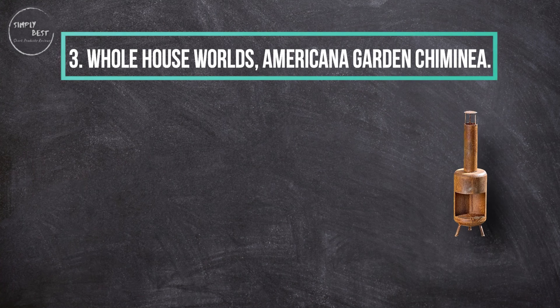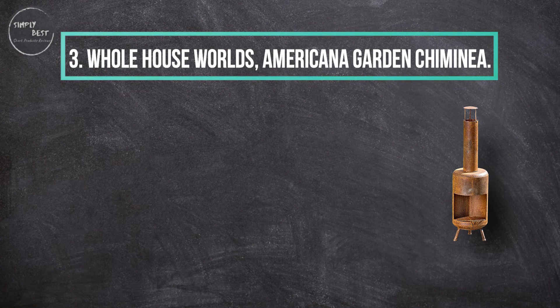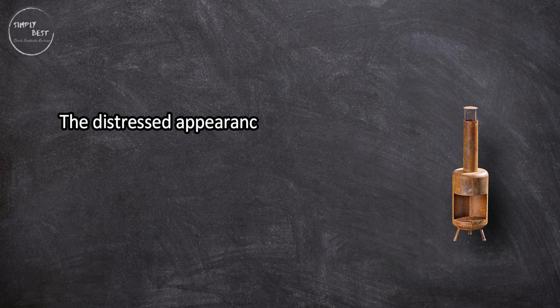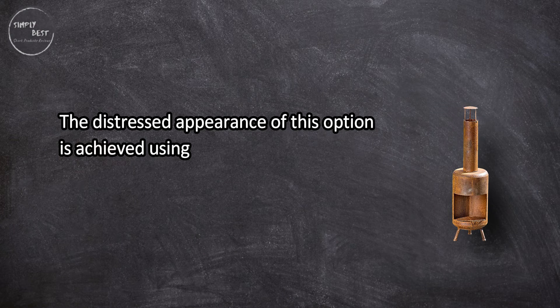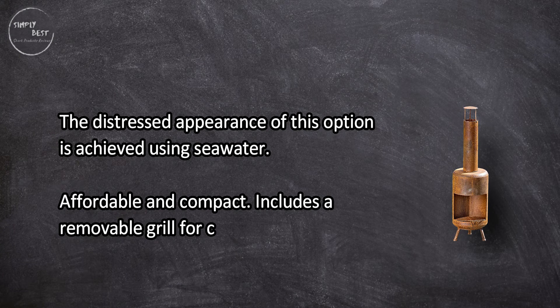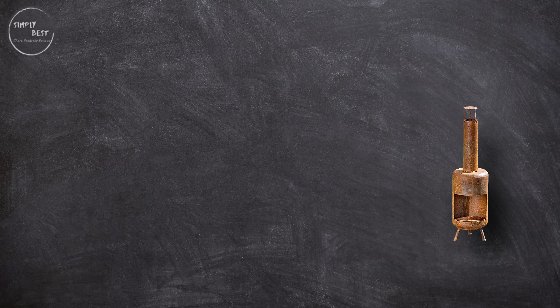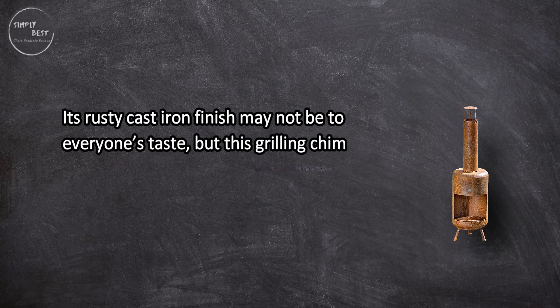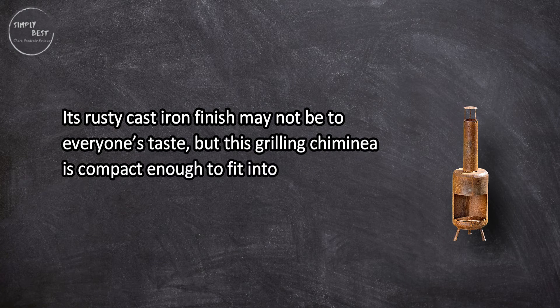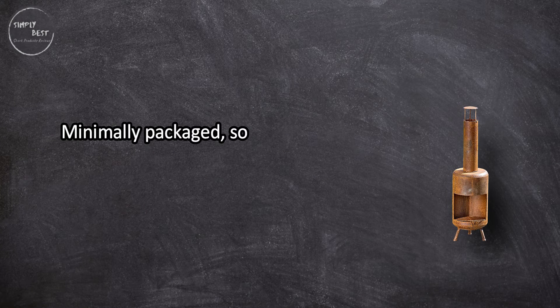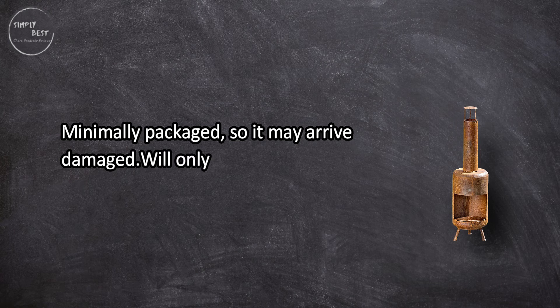At number three, Whole House Worlds Americana Garden Chimenea. The distressed appearance of this option is achieved using seawater. Affordable and compact, includes a removable grill for cooking. Its rusty cast iron finish may not be to everyone's taste, but this grilling chimenea is compact enough to fit into tight spaces. Minimally packaged, so it may arrive damaged. Will only fit wood up to a foot in diameter.